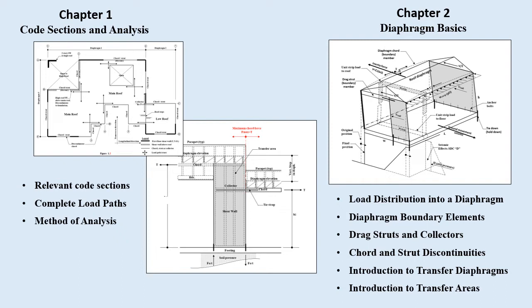Chapter one covers relevant code sections regarding complete load paths, wind and seismic provisions, and basic methods of lateral analysis, including demonstration of complete load paths and methods of analysis. Chapter two covers load distribution into a diaphragm, diaphragm boundary elements, drag struts and collectors, cord and strut discontinuities, introduction into transfer diaphragms, and introduction into transfer areas.